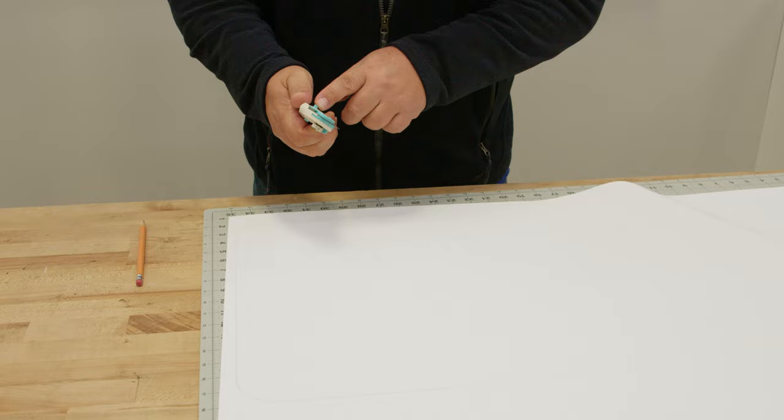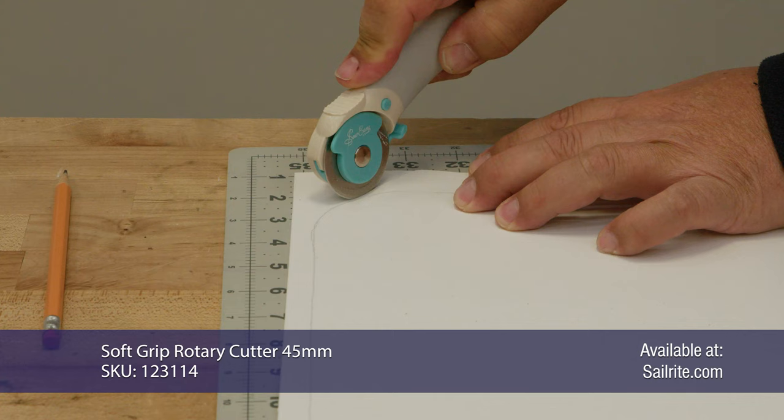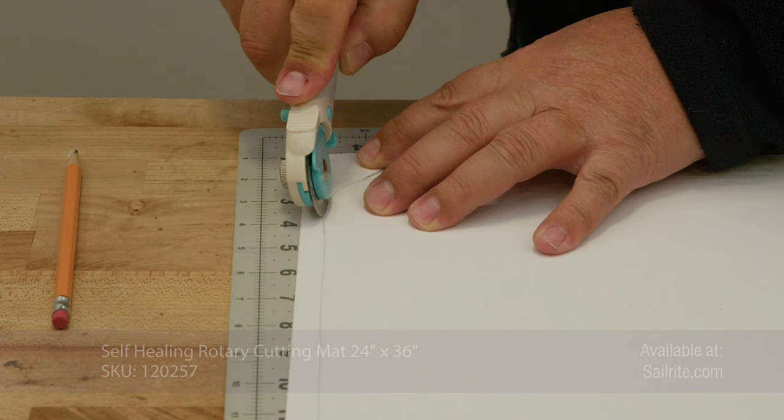I'm using a rotary cutter and a cutting mat and I'll just go around the perimeter. There's no reason to use a hot knife for this because we're going to put a binding on the edge.